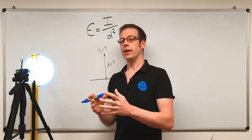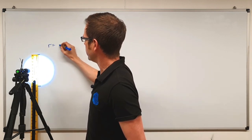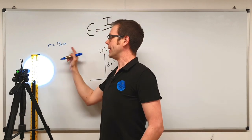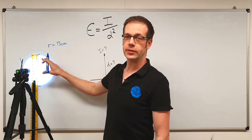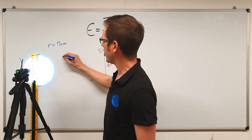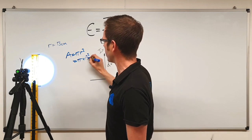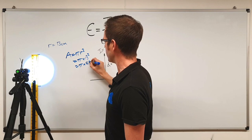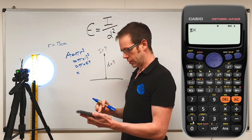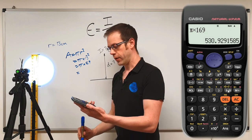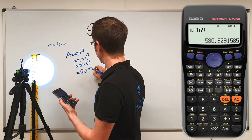For the sake of clarity I'm going to keep this all in centimetres rather than converting to metres. That means the radius r of this circle is equal to 13 centimetres. So we can now figure out what area of the whiteboard is being illuminated. Area equals pi r squared, so that's pi times 13 squared, which is pi times 169.